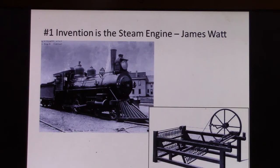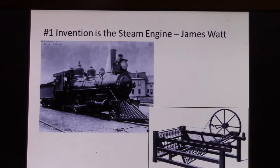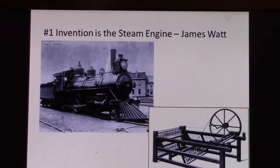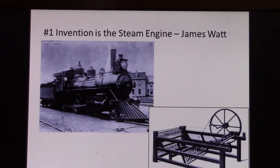Then Watt enlisted the help of a couple other guys — Bolton and another — and they modified the engine not just to pump water out of mines, but to help move transportation. By the early 1800s, steam engines were put on trans-oceanic vessels and steam railroad cars. A human can walk about 20 miles per day, riding a horse about 60 miles a day. On the steam engine, people could go 20 miles in one hour.